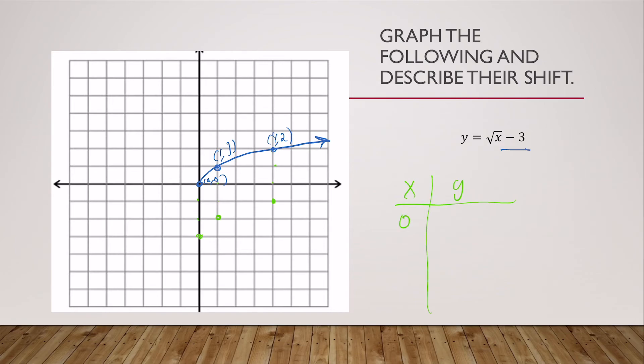I have when x is zero, y is negative three. When x is one, I've got the square root of one minus three, which is negative two. And when x is four, y is the square root of four minus three, which is negative one. Let's make sure that's the case. Here when x is zero, y is negative three. Here when x is one, y is negative two. And here when x is four, y is negative one. So this is our graph of our radical square root function shifted down three.